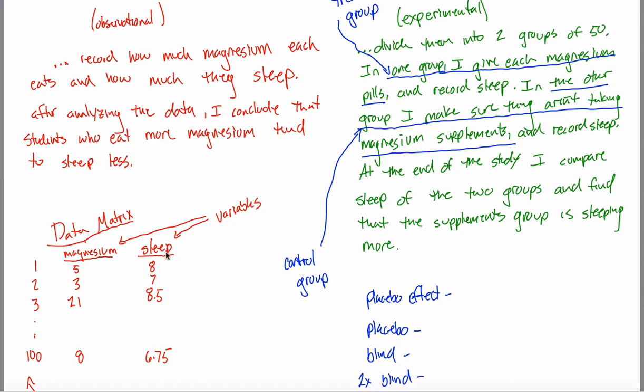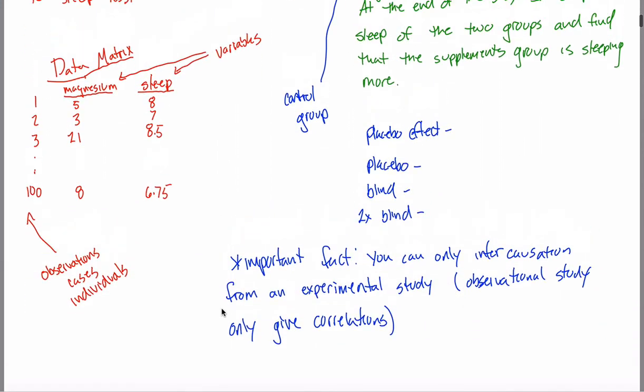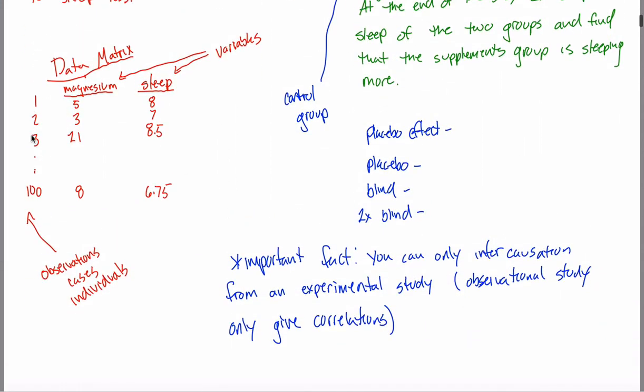What I want to get at in this video is more on this data matrix. So wherever it comes from, whatever type of study, it won't matter. You got your data matrix. And as we learned last time, the rows of a data matrix are what are called the observations, sometimes called cases or individuals as well. And the columns of your data matrix, the things that you're tracking for each observation, are called the variables.